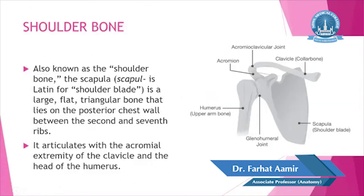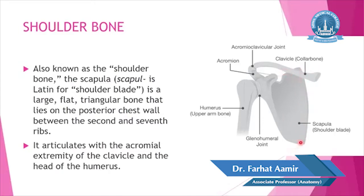Scapula is also known as shoulder bone. The word scapula is derived from a Latin word 'scapul' which means shoulder blade. It is also known as shoulder blade — a large flat triangular bone that lies on the posterior chest wall between the second to seventh rib.